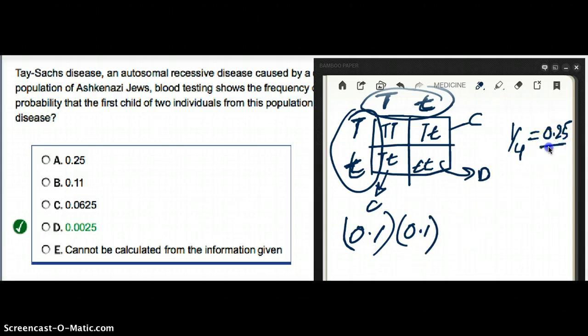And the probability that this child is going to have Tay-Sachs is 0.25. So the answer is 0.0025.